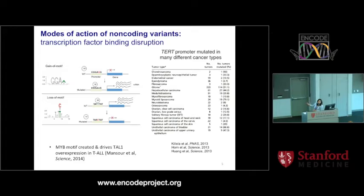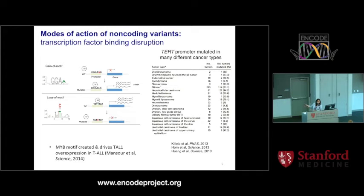One of the most common modes is the disruption of transcription factor binding. The most famous example that made non-coding regions popular in the cancer community is the TERT promoter. In 2013, two papers published back-to-back in Science talked about highly recurrent mutations in the TERT promoter in melanoma. This started a wave of everyone looking at non-coding regions, and within the next two years about 50 papers were published showing mutations in the TERT promoter across many different cancer types. A table from Kilela et al. shows the TERT promoter is mutated across different cancer types, some at really high frequencies like 79.1%. As a result, TERT promoter mutations have made it to the clinical stage — the Memorial Sloan-Kettering panel actually tests for the presence of the TERT promoter. Another famous example was the creation of the MYB motif that drives TAL1 overexpression in ALL.